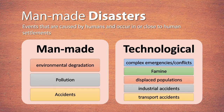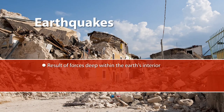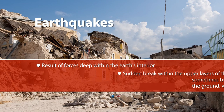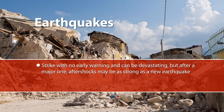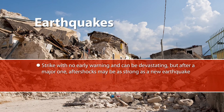Let us take a few examples so you can get an idea of how to deal with such topics. A very common topic under natural disaster is earthquakes. We all know that earthquakes result from forces deep within the Earth's interior, and a sudden break within the upper layer of the Earth sometimes breaks the surface, resulting in vibration of the ground strong enough to cause collapse of buildings and destruction of life and property. The problem with earthquakes is that they strike with no early warning, so they can be devastating, and after a major one, aftershocks often appear that are sometimes as strong as a new earthquake.